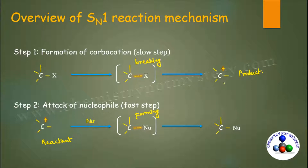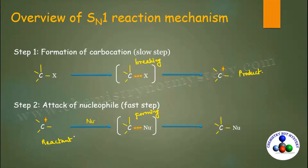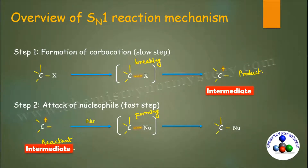So how do you identify which one is the intermediate? The intermediate is the molecule which you get as a product in one step of the reaction, and the same molecule acts as a reactant for the second step of the reaction.